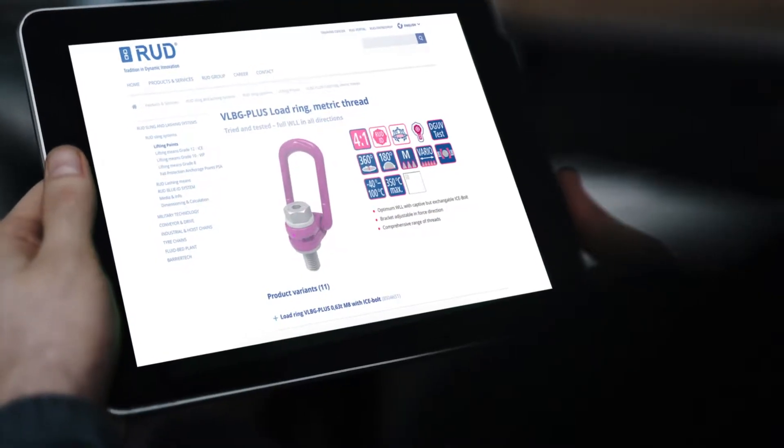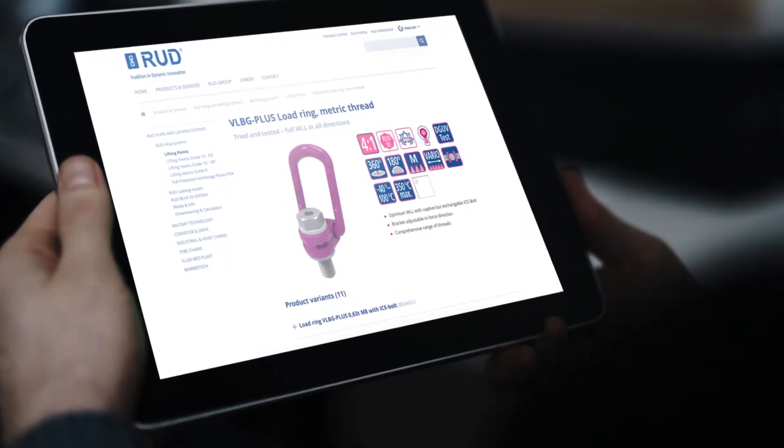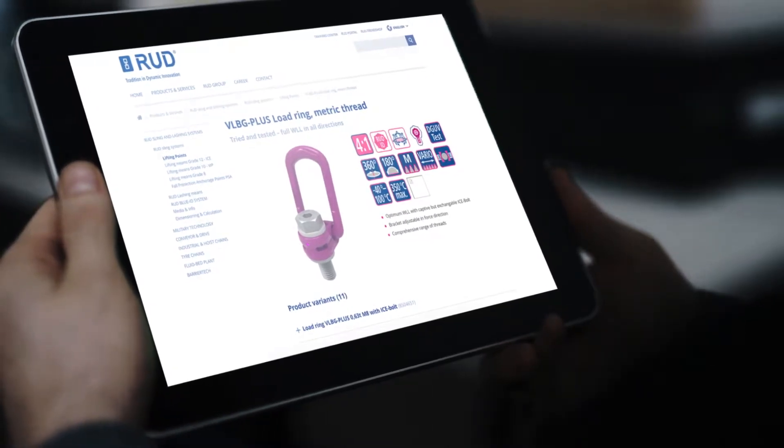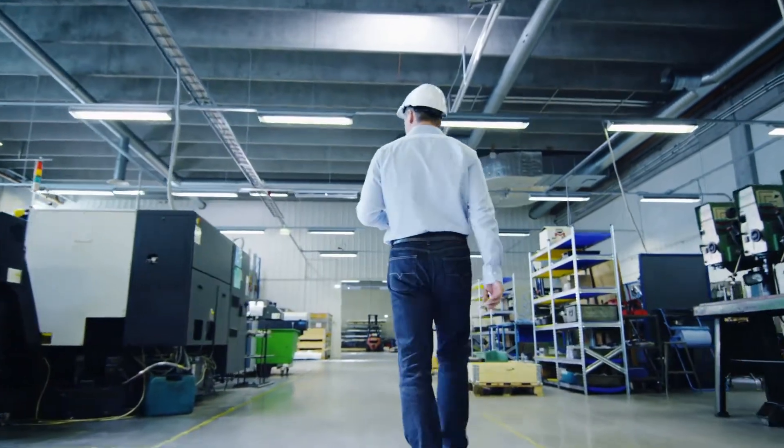As well, by reading out the ID number online, you can access central product data such as marking, load capacity, test data, operating instructions and much more. And all this directly on site.